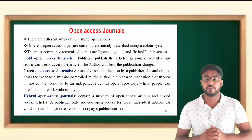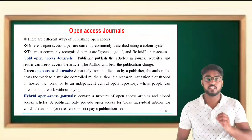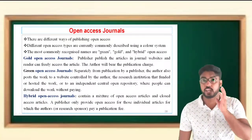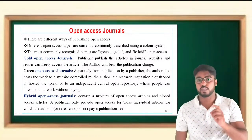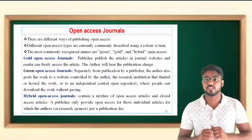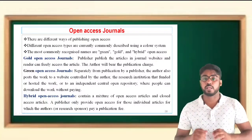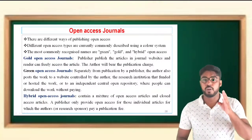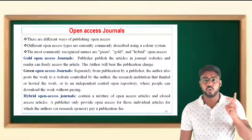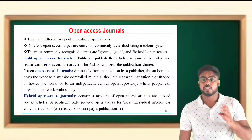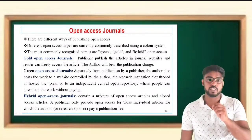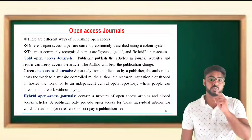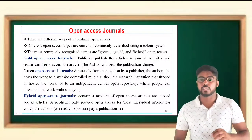There are different ways of publishing open access, and the different open access types are currently commonly described using a color system. The most commonly recognized names are green, gold, and hybrid open access.